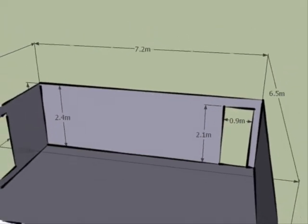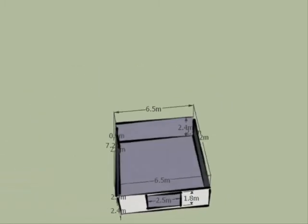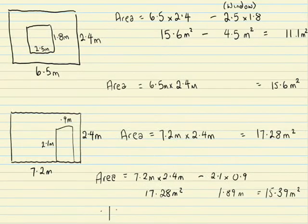We've worked out all the areas of the walls, take away the areas that we're not going to be looking at, the window and the doors. So all we need to do now is total them.